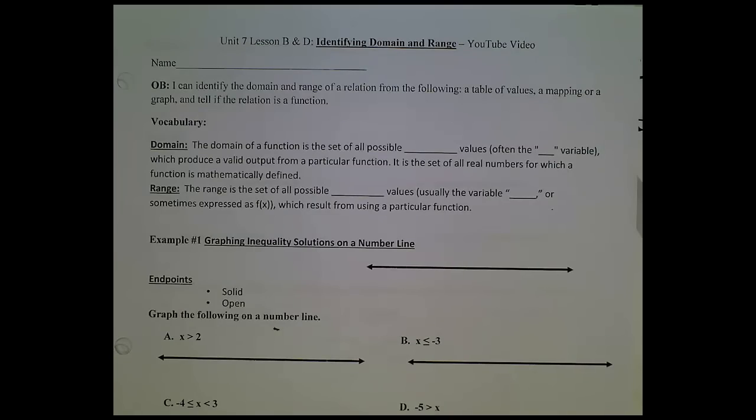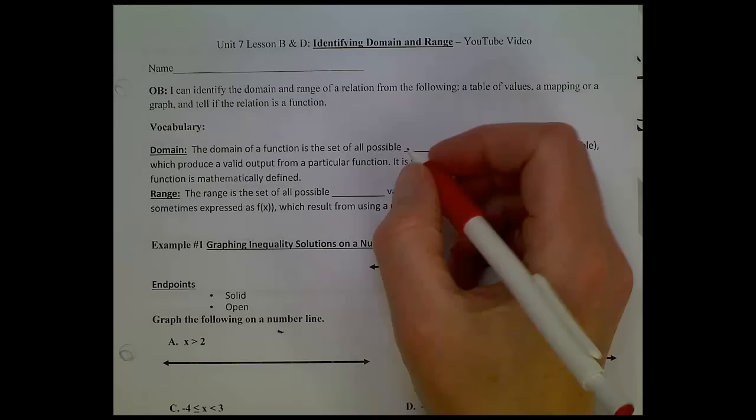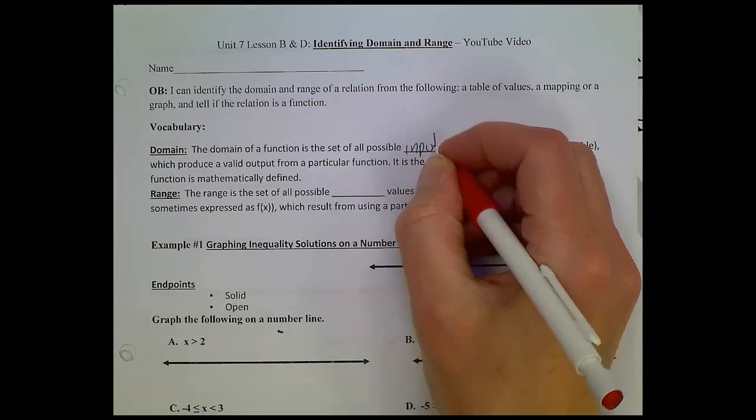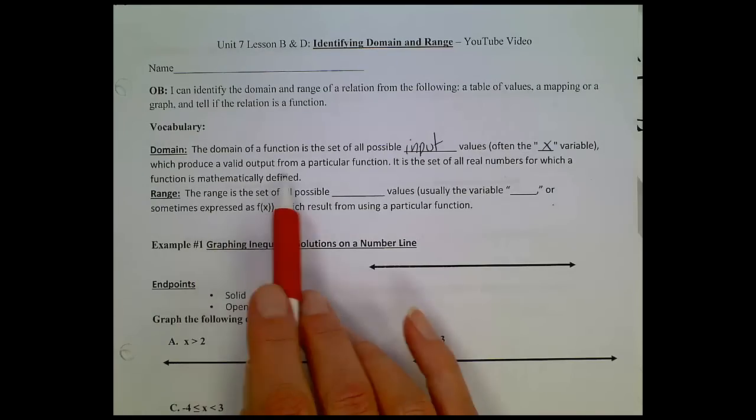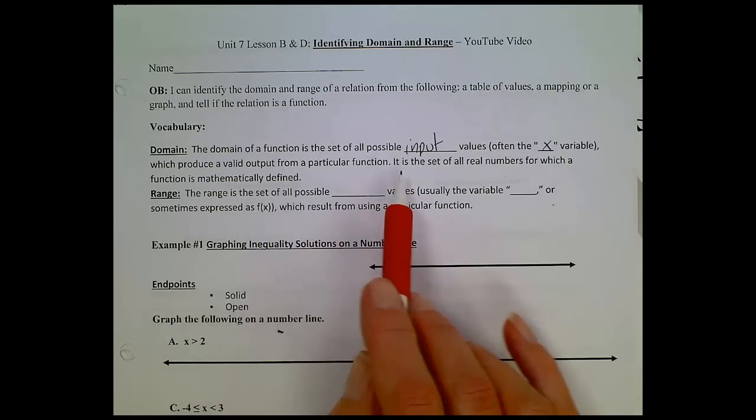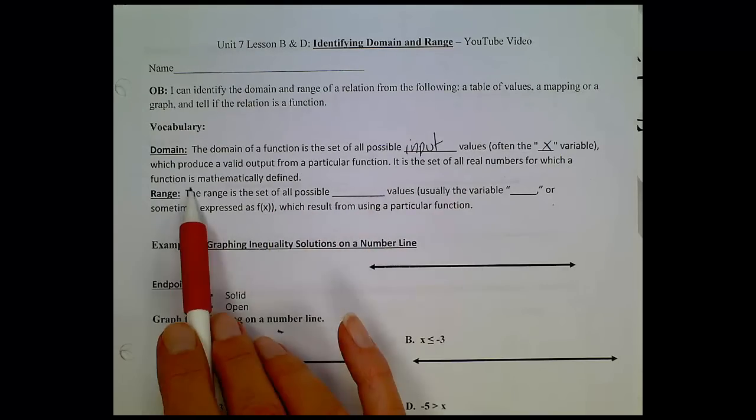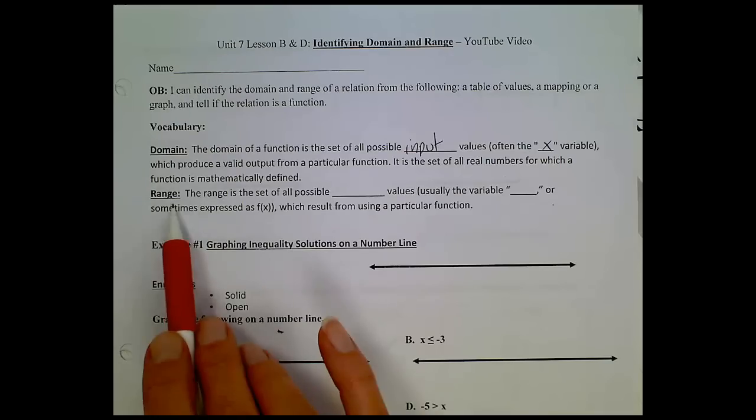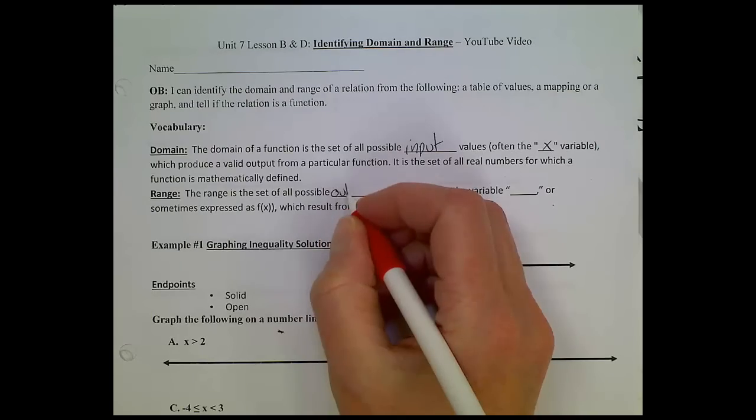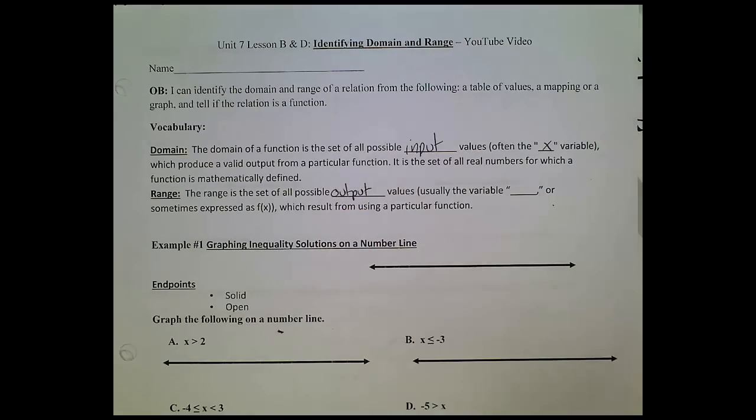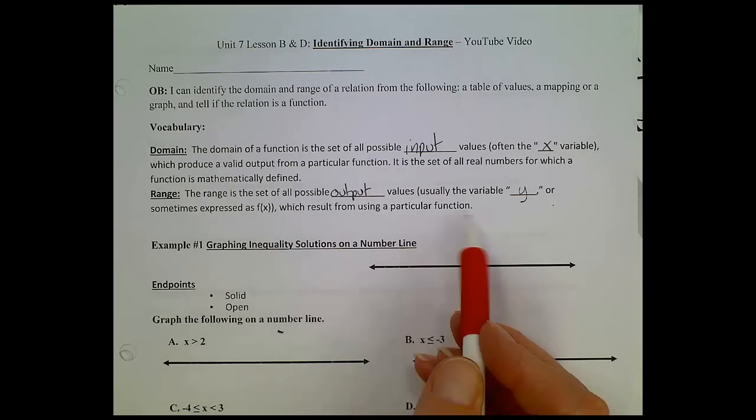The domain of a function is a set of all possible input values, often referred to as the x variable, which produce a valid output from a particular function. It's a set of all real numbers for which a function is mathematically defined. Range, the range is a set of all possible output values. Usually the variable y or sometimes expressed as f of x, which results from using a particular function.